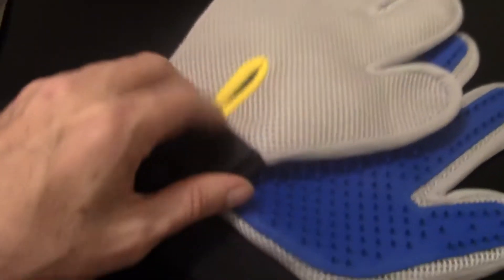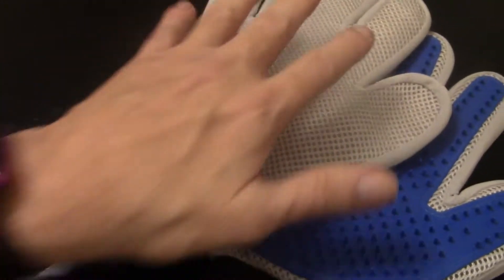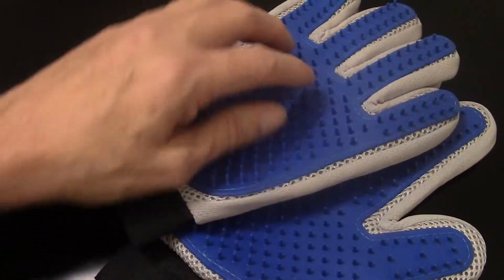They've even got a velcro strip here where it keeps them snug on your hand so you don't drag your hand out of it while you're petting.